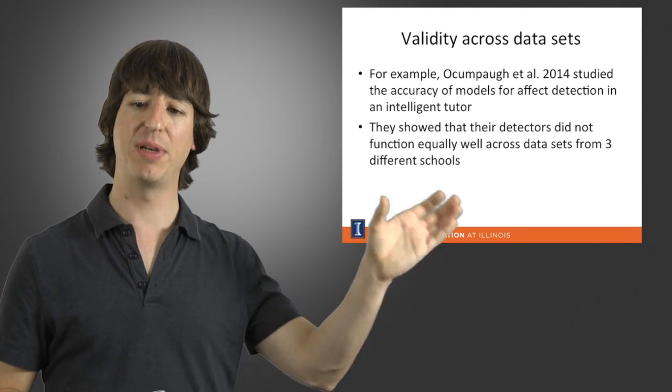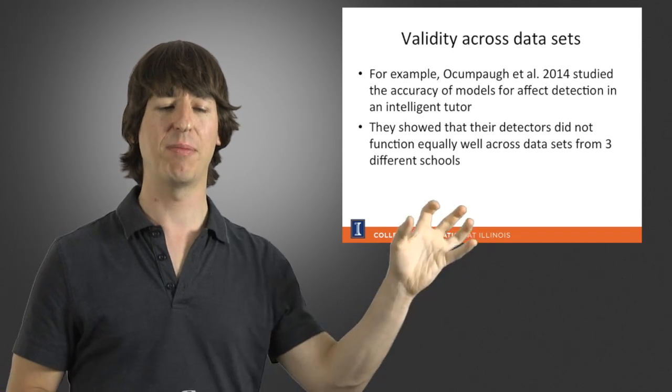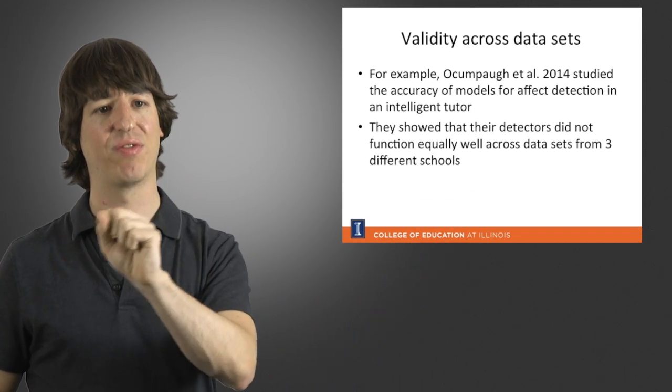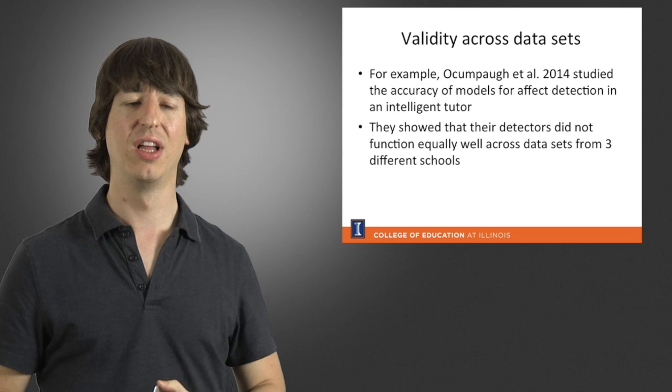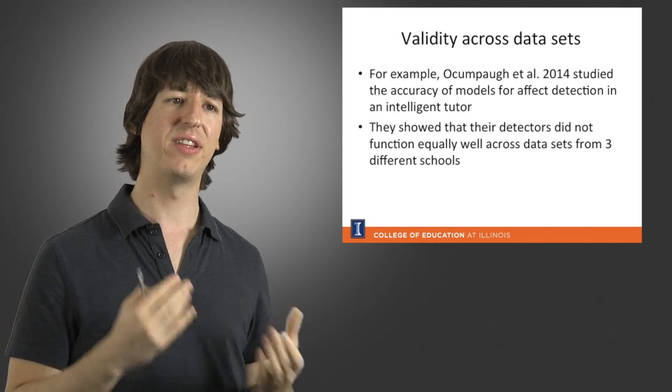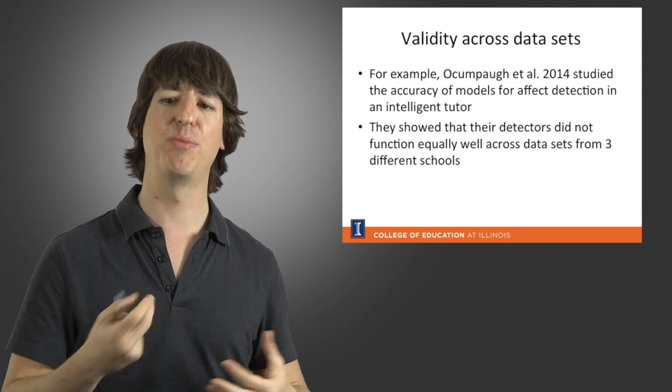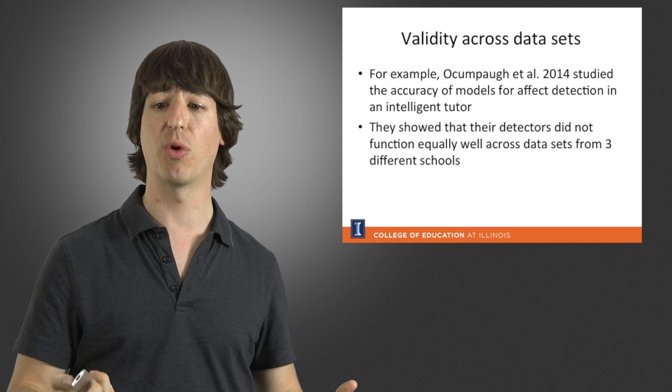So if the model was built using data from one school, it might not be as effective when applied to data from a second school. So how do we make sure that the models that we build, when we apply them to a new dataset, they're actually going to be working well?